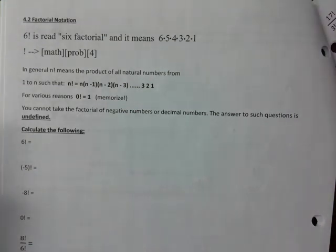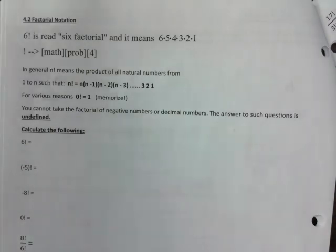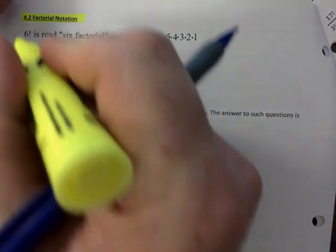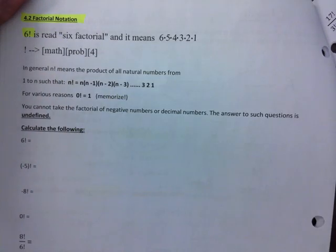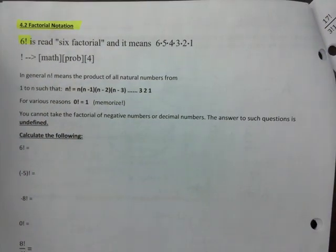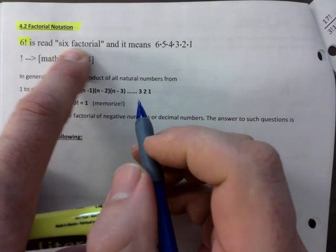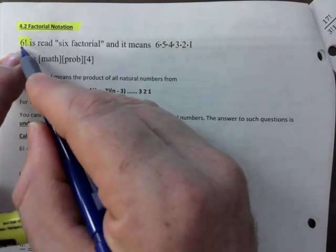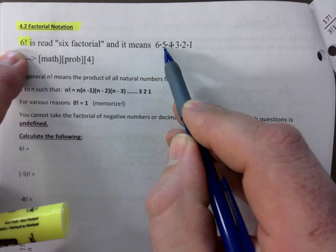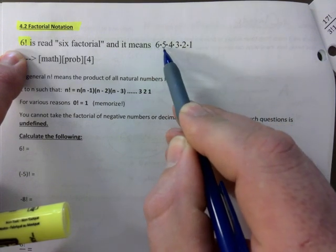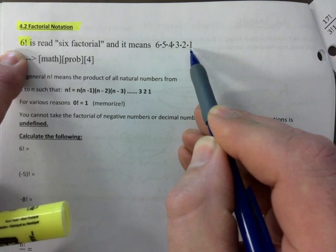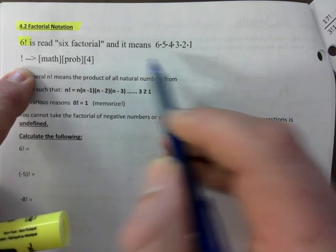Now's the time to get off your phone. Factorial notation — this is on page 9. The exclamation mark is not just saying six, it actually means something in math. It reads 'six factorial,' and what it means is starting with six, you multiply: six times five times four times three, going all the way down to one. It becomes a big number really fast.